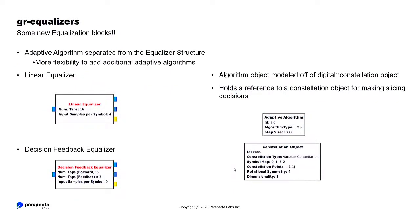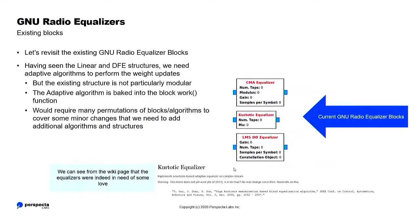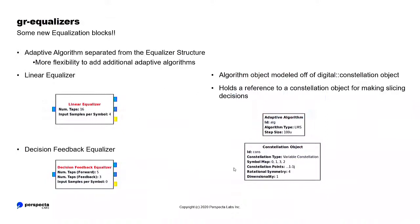So what we have up on the GitHub is some new blocks. There's two new blocks. There's this linear equalizer block, which we talked about, which is the basis for these blocks. It's just these blocks stripped out, stripped out the adaptive algorithm part. And then there is now a decision feedback algorithm equalizer. So now these blocks take in an adaptive algorithm object. So this is modeled on the digital constellation objects. It holds a few methods and then you can use it in either of these, either of the equalizer structures.